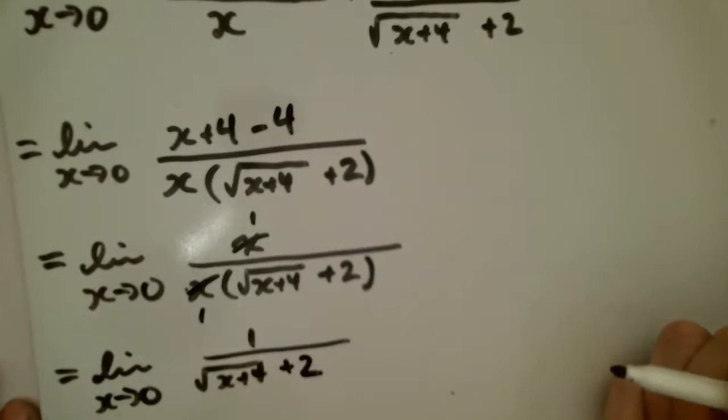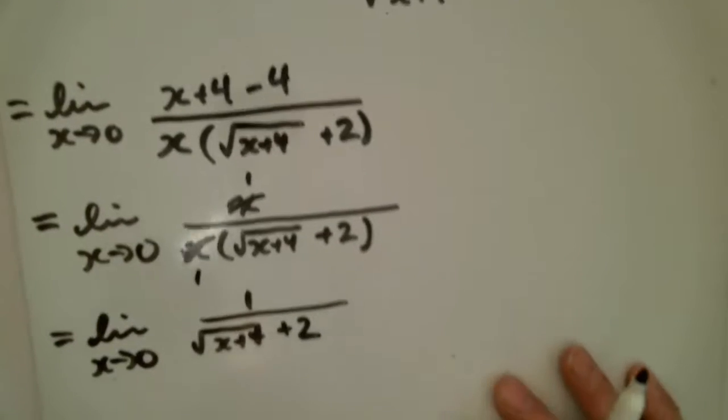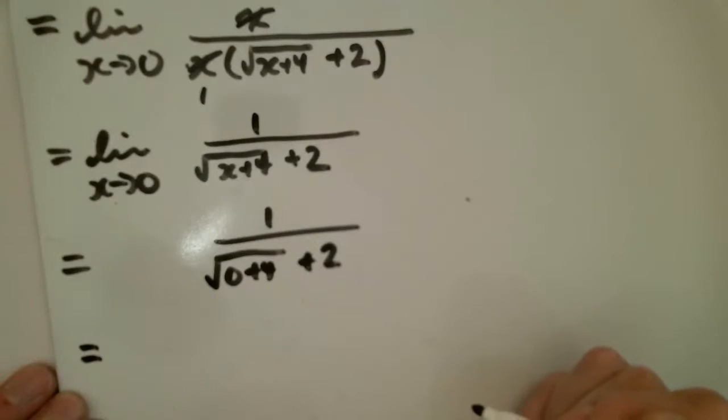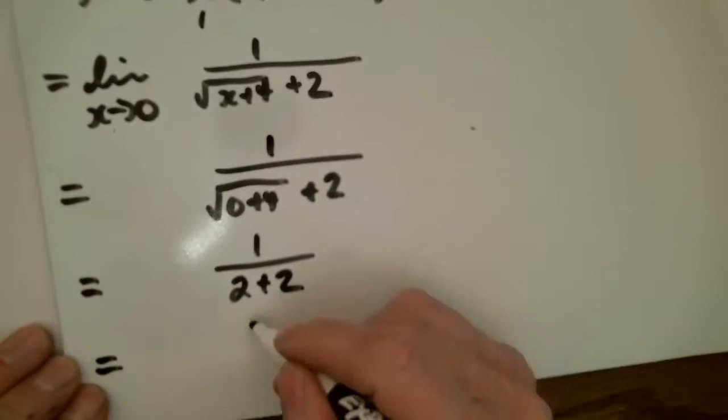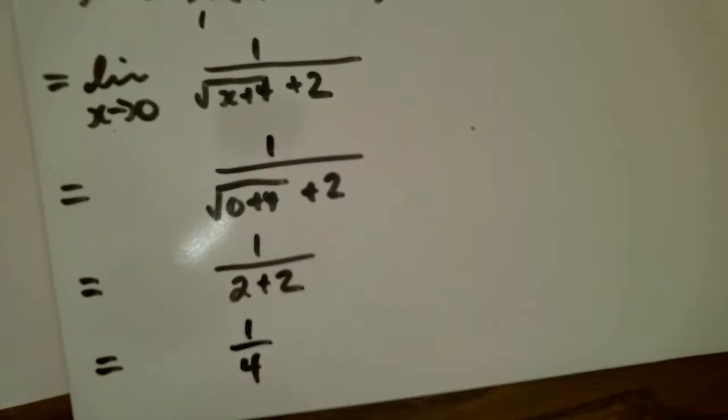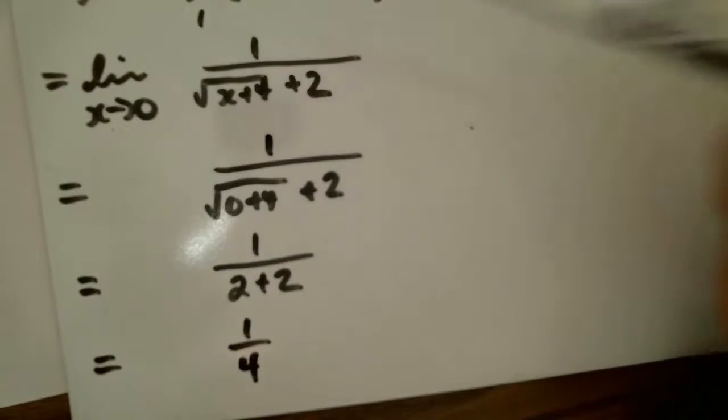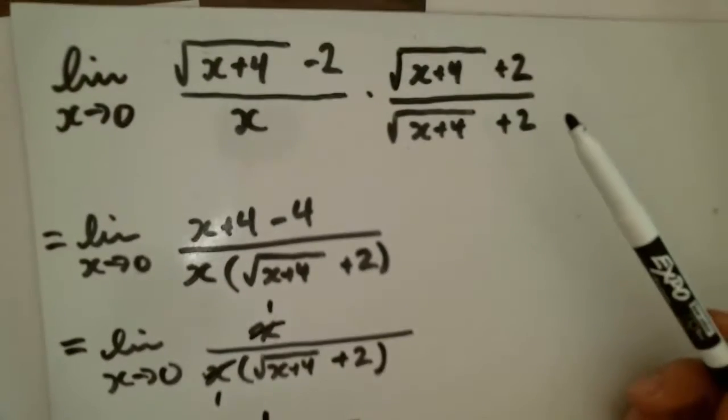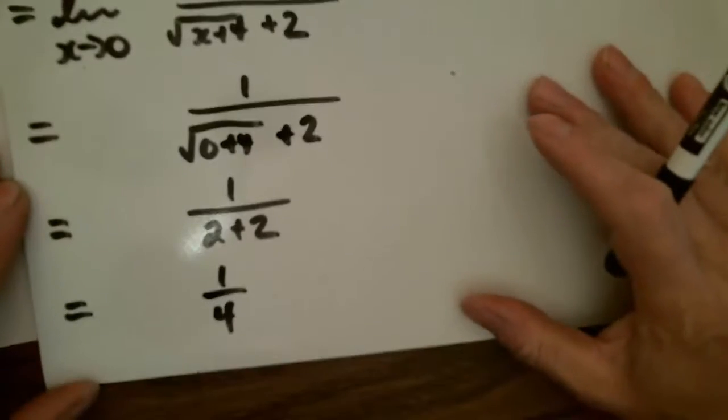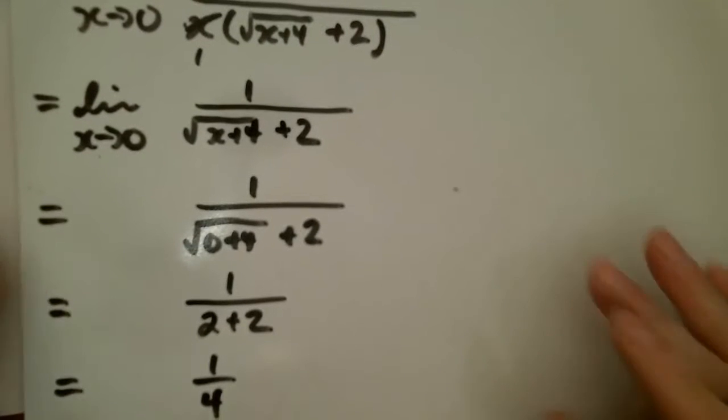Now what I see is that I can actually substitute 0 in for x and this is no longer going to be of the form 0 over 0. And so the limit as x goes to 0 of this expression ends up being 1 quarter, thanks to the use of the conjugate.